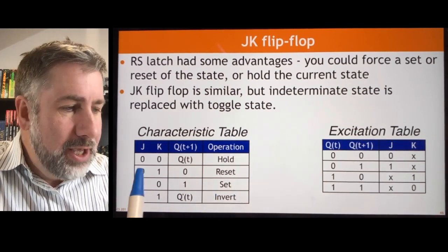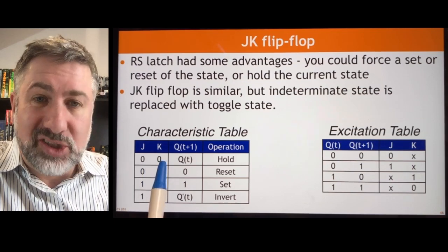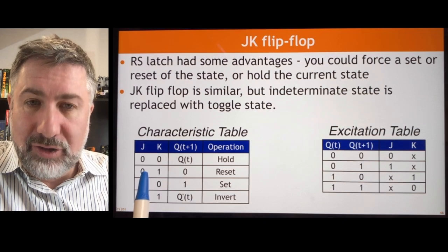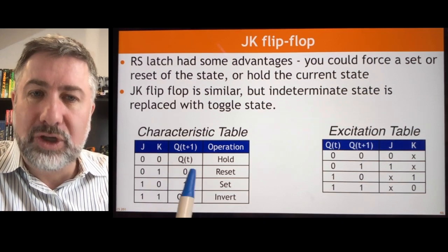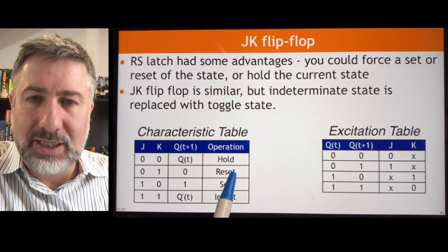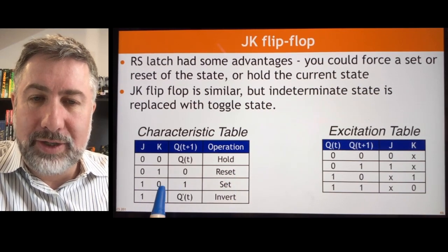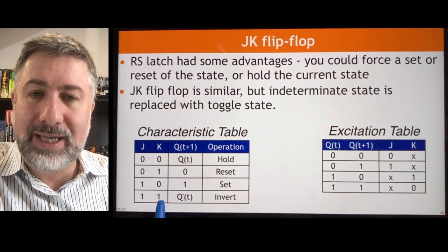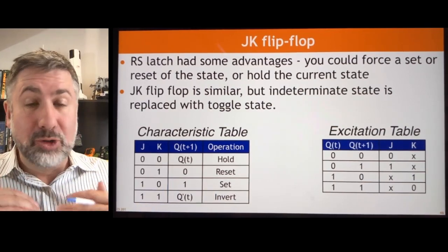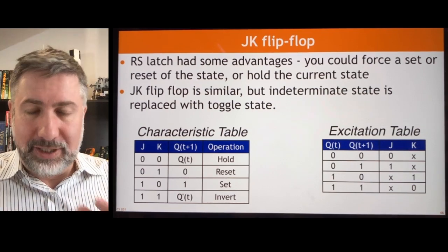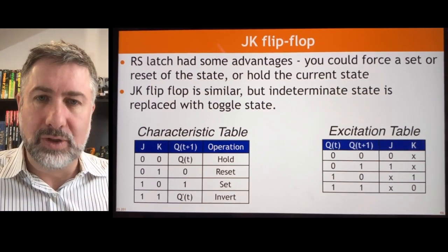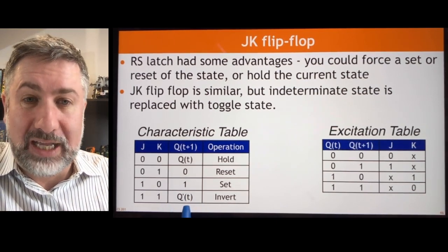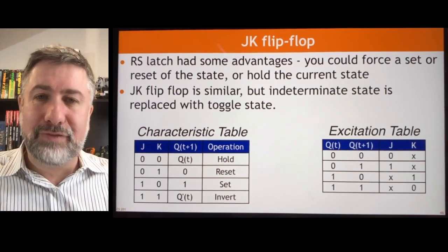If both J and K inputs are zero, we're going to hold the value — just like an RS latch. If J is zero and K is one, we're going to reset, again just like the RS latch. If J is one and K is zero, we're going to set, just like the RS latch. And if J is one and K is one, the next stable stored state will be the opposite of whatever is currently being stored — so we invert, but in a much more stable and consistent way than the race condition would allow.